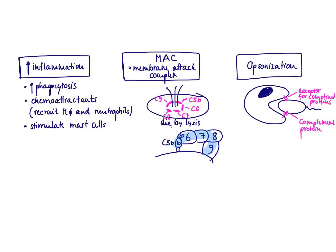After having discussed some general principles of complement proteins, let's now talk about what the complement system does — the effector functions of the complement proteins. The complement proteins can trigger three things: number one, triggering inflammation; number two, forming the membrane attack complex; and number three, helping with opsonization.